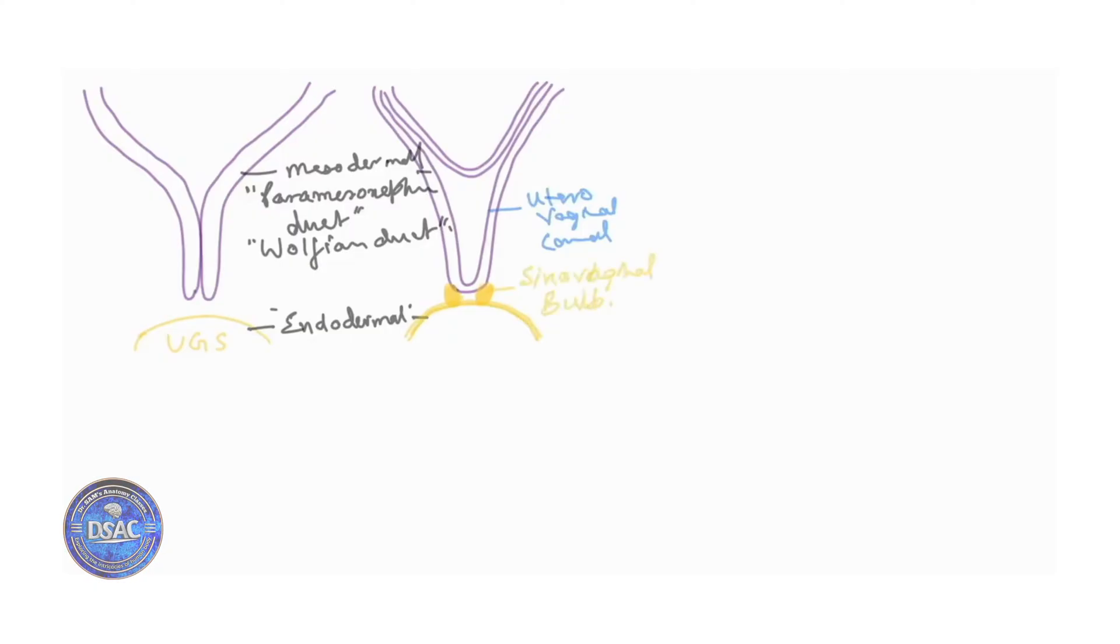Now together with this sinovaginal bulb I'm drawing it this much portion here to zoom it out. So this is the uterovaginal canal and this is the urogenital sinus and this is the sinovaginal bulb. So the two sinovaginal bulbs they actually fuse to form a solid plate here.